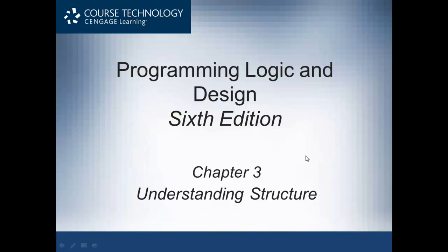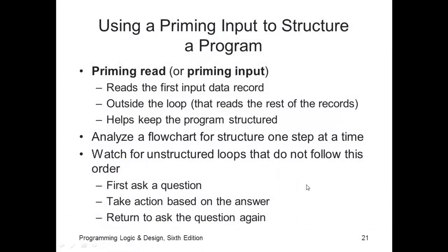Continuing with the Chapter 3 lecture, we pick up with discussing the priming read. The priming read is getting the data for the loop's sentinel value to determine whether or not we're going to enter the loop. It's often referred to as reading the first input data record.